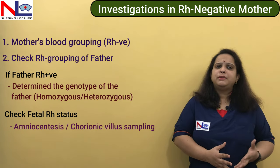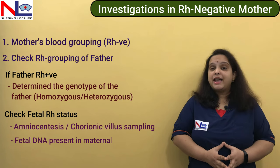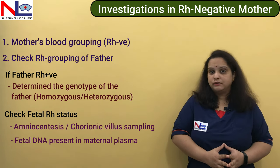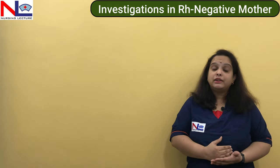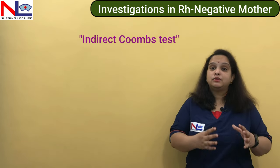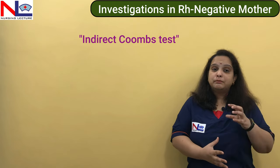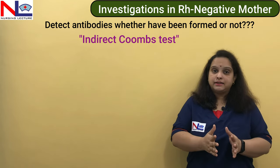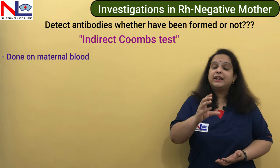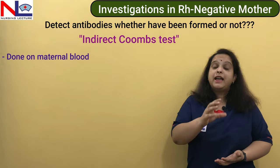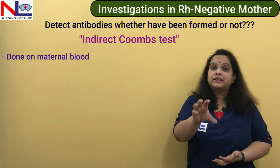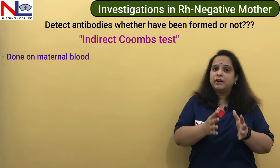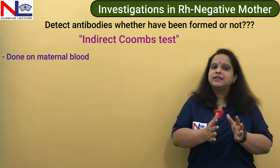There are other means as well — we can take a sample of the mother's plasma, in which fetal DNA is present, and check the fetal blood group from maternal plasma. But the most important test carried out is the ICT — Indirect Coombs Test. By this test we can detect the antibodies formed in the mother's blood. Indirect means we are taking a sample from the mother, while direct means we take blood from the fetus itself. Ultimately, we are finding the Rh antibodies formed in the mother's body against the Rh antigen.